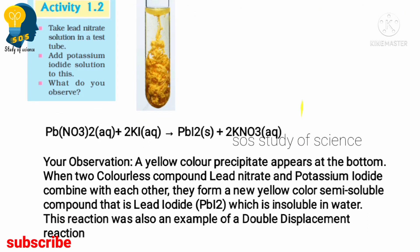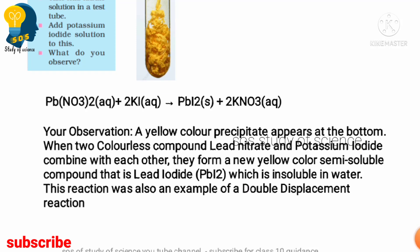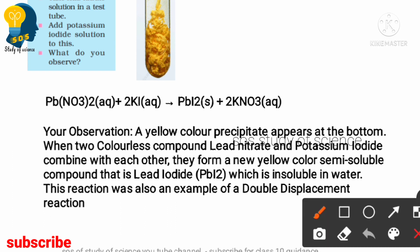For your examination, write your observation as: a yellow colored precipitate appears at the bottom when two colorless compounds — lead nitrate and potassium iodide — combine. They form a yellow colored, semi-soluble or insoluble compound. If asked to name the yellow precipitate, the answer is lead iodide. This reaction is an example of a double displacement reaction.